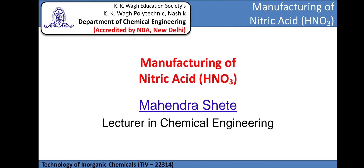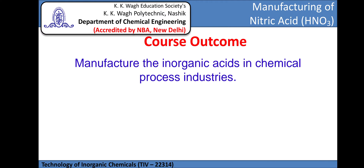In this session we are going to study the manufacturing of nitric acid as a part of the course Technology of Inorganic Chemicals from the third semester of Diploma in Chemical Engineering. The course outcome for this session is to manufacture the inorganic acids in chemical process industries. At the end of this session you will be able to describe raw materials, chemical reactions, and the process flow sheet involved in manufacturing of nitric acid, as well as the properties and uses of nitric acid.